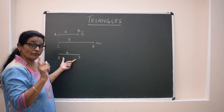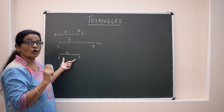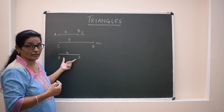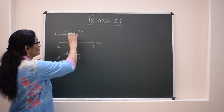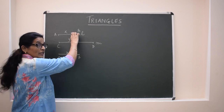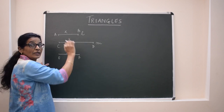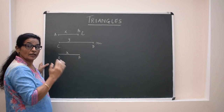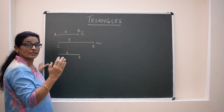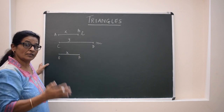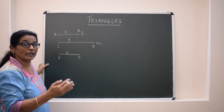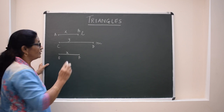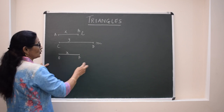So if the figures are congruent, definitely they will be similar. But if the figures are similar, they may not be congruent. So all the congruent figures are similar, but all the similar figures may not be congruent.